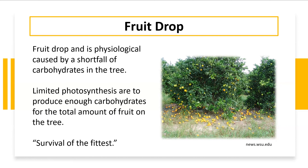Fruits need an abundant amount of carbohydrates from photosynthesis in order to grow to the size they need to. If there's not enough leaf growth — especially when trees are smaller and have set a lot of flowers and fruit — the lesser fruits are going to naturally fall and drop to the ground. It's kind of like a survival of the fittest for the tree.